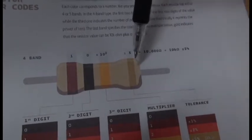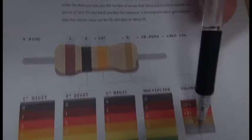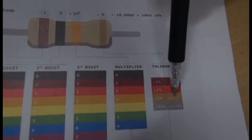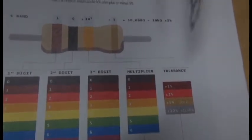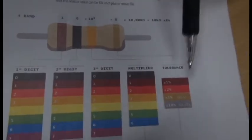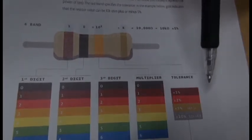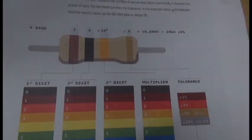The fourth band is the tolerance, or how close the actual resistance is guaranteed to be to the marked value. Silver is ten percent, gold is five percent, red is two percent, and brown is one percent.